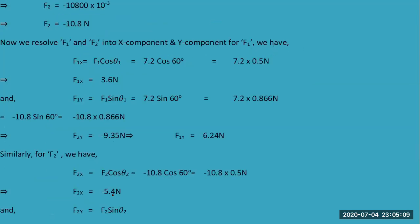Then we calculate F2, the force between q2 and q3. After putting in the values, F2 is calculated. Then we resolve F1 and F2 into horizontal and vertical components. The horizontal component is F1 × cos(θ1) and the vertical component is F1 × sin(θ1).